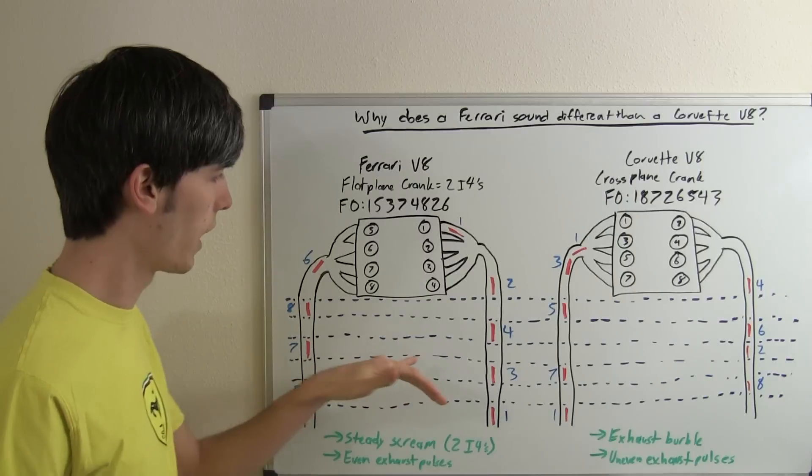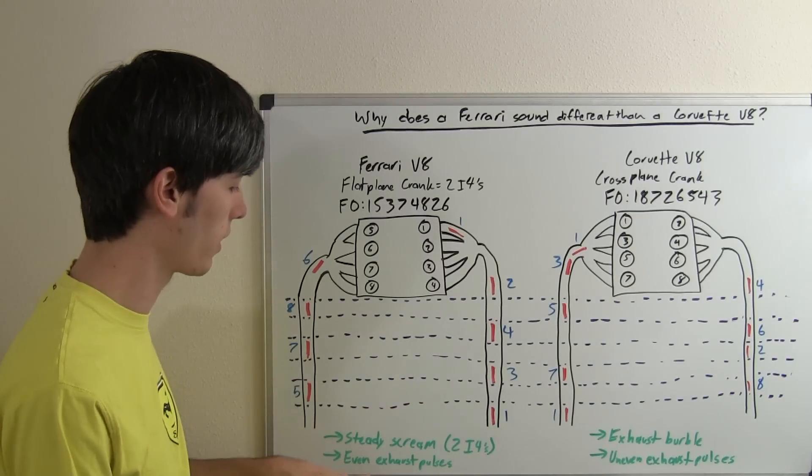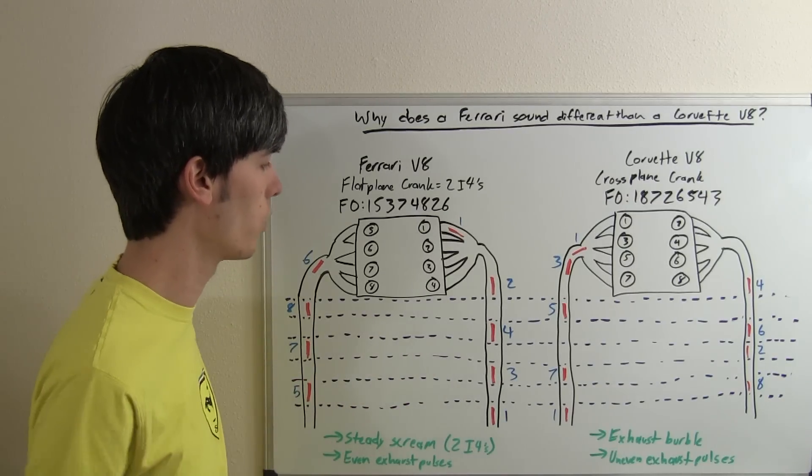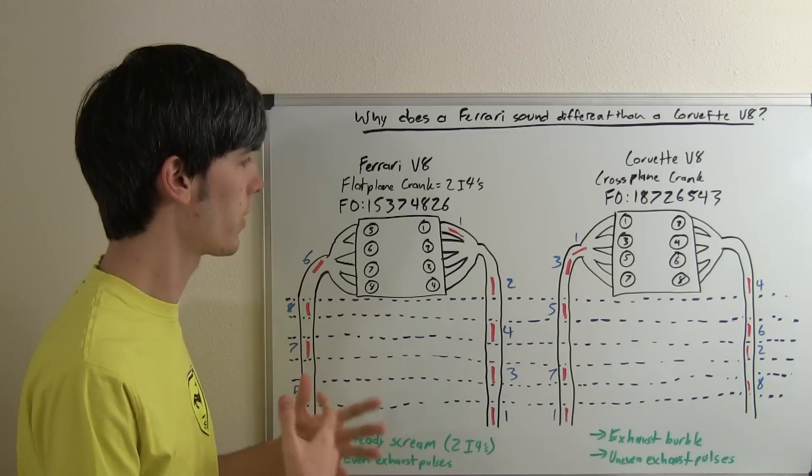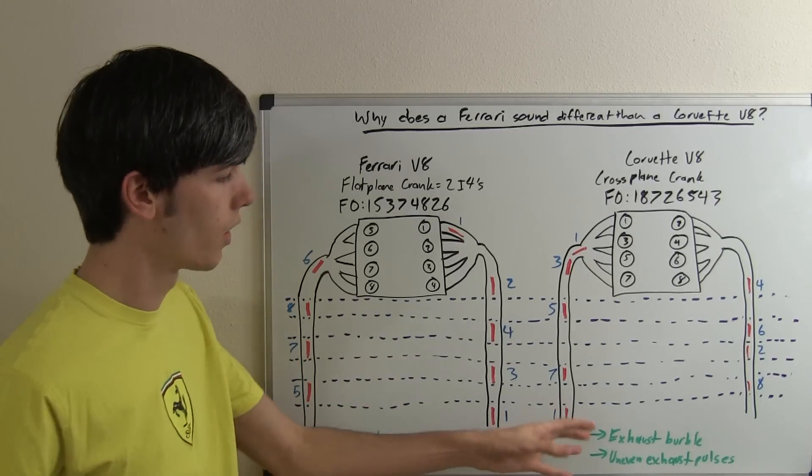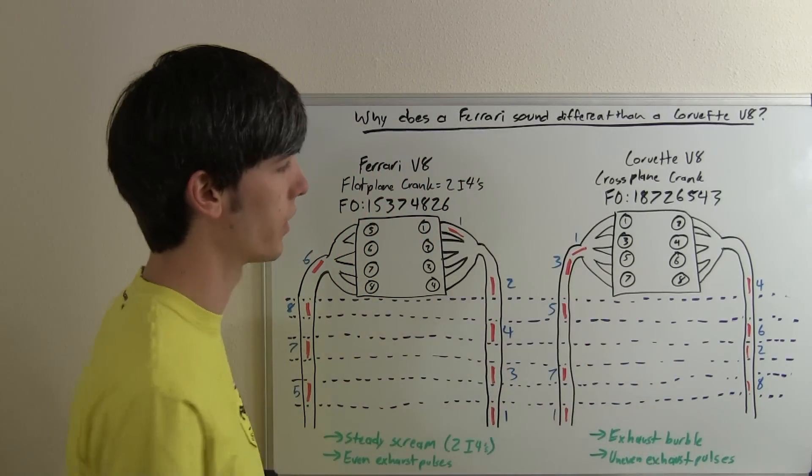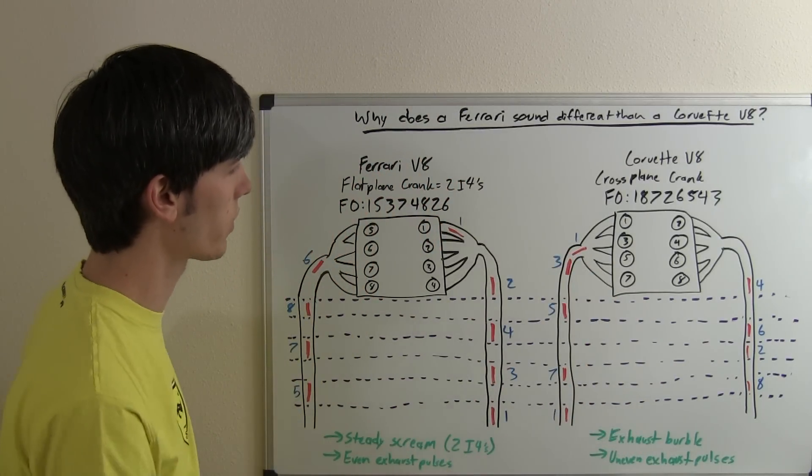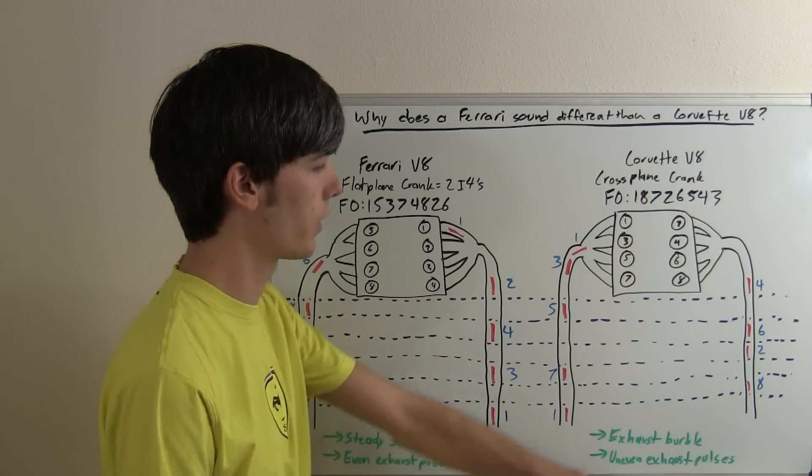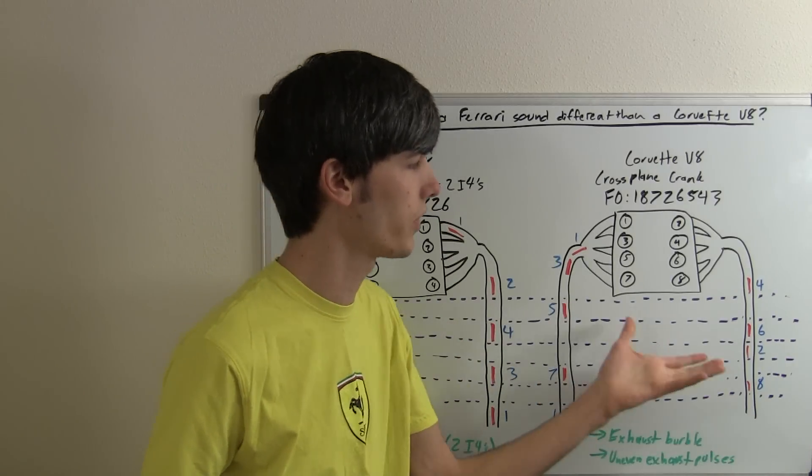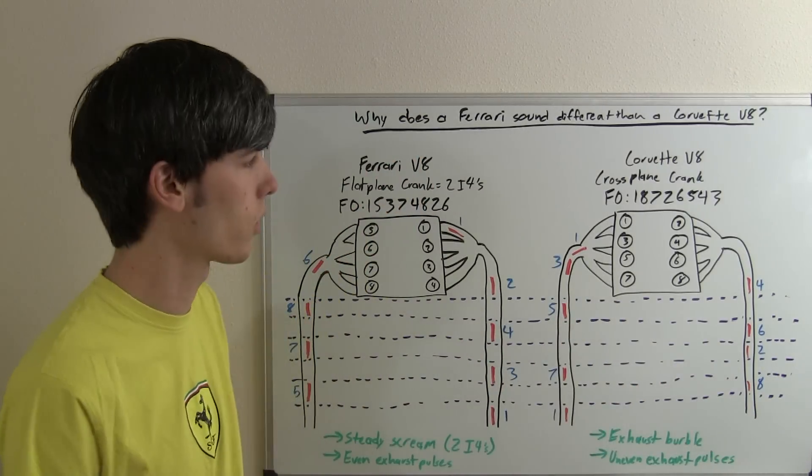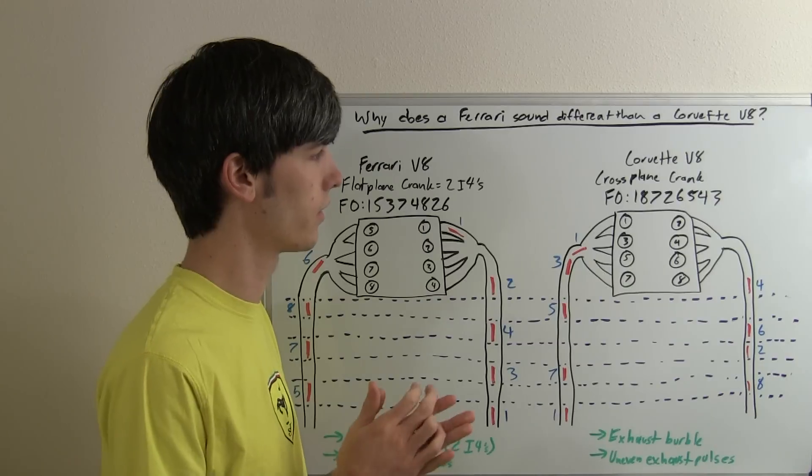The advantage of having them evenly placed is that the even exhaust pulses give you a more steady exhaust scavenging, whereas the exhaust scavenging with this is going to be kind of uneven depending on the pulses. So you can get kind of better exhaust scavenging with a setup like this. You'll have that kind of characteristic burble sound with this Corvette V8 engine layout.